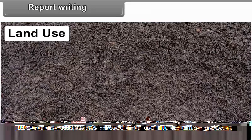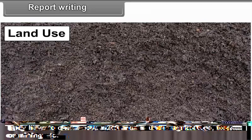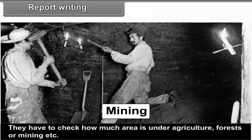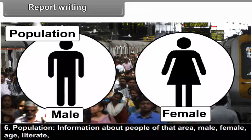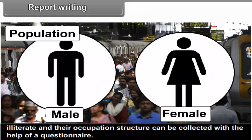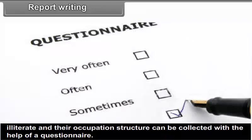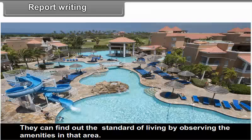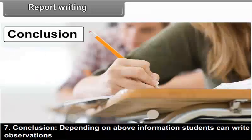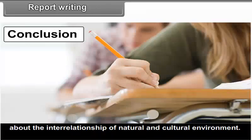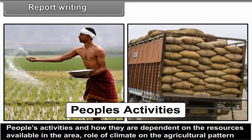5. Land Use: Students should find out the land use pattern — how much area is under agriculture, forests or mining, etc. 6. Population: Information about people of that area — male, female, age, literate, illiterate — and their occupation structure can be collected with the help of a questionnaire. The standard of living can be assessed by observing amenities in that area. Charts or graphs can be prepared for the population report. 7. Conclusion: Depending on the above information, students can write observations about the interrelationship of natural and cultural environment, people's activities, and how they are dependent on the resources available.